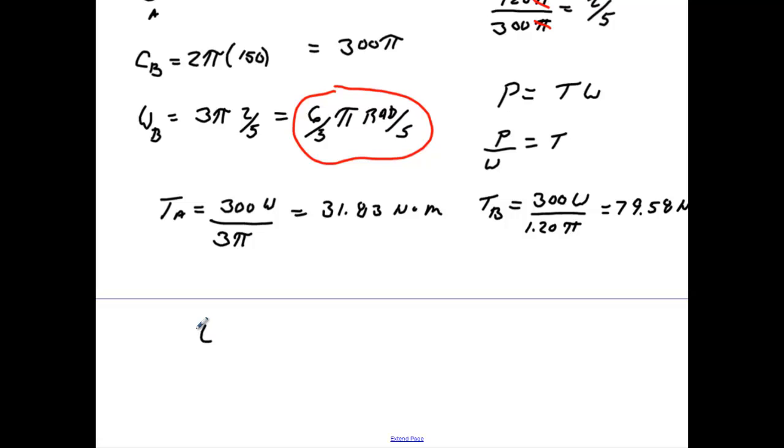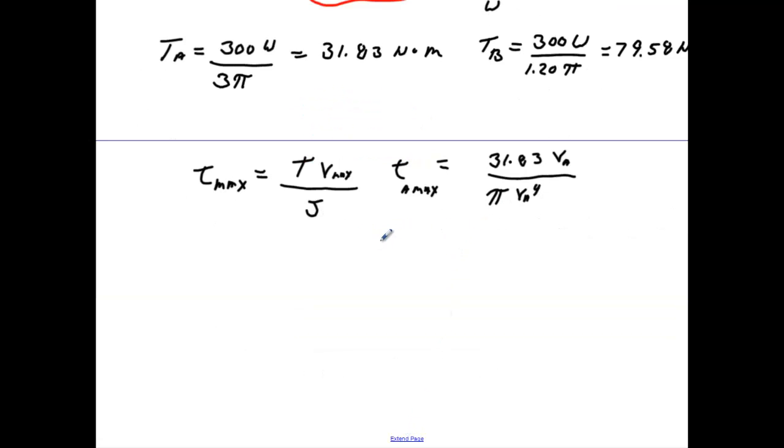All we have to do, we know our shear max is going to equal to torque times the maximum radius divided by J, polar moment inertia. So we'll calculate what it'll be for A. Take our 31.83, multiply that by our radius at A times π times the radius at A to the fourth power, which is polar moment inertia. So we need to simplify that. We're going to say τ max is going to equal to 31.83 over π times the radius at A to the third power.